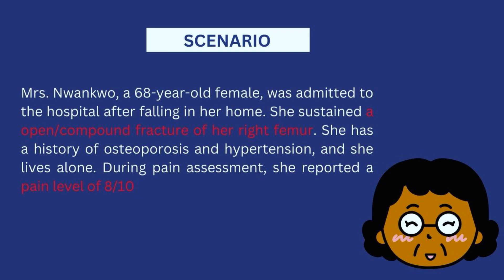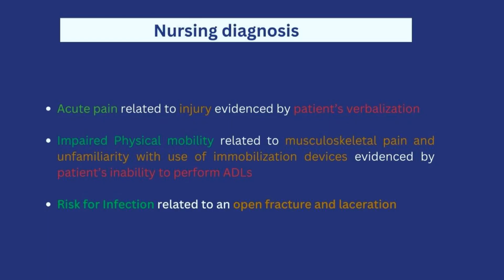Now let's go over the nursing diagnoses. There are three nursing diagnoses we'll be working on for Mrs. Nwako. There are two actual diagnoses and one risk diagnosis. Actual diagnoses have three segments: the problem in green, the etiology or possible cause in brown, and the evidence in red. The risk diagnosis has only two statements — the problem and the etiology.